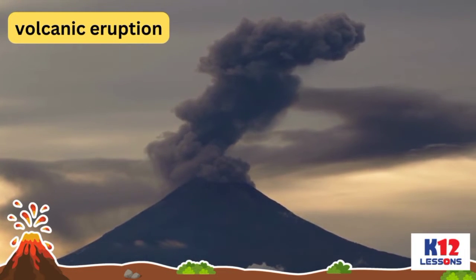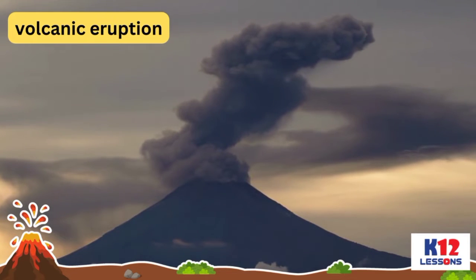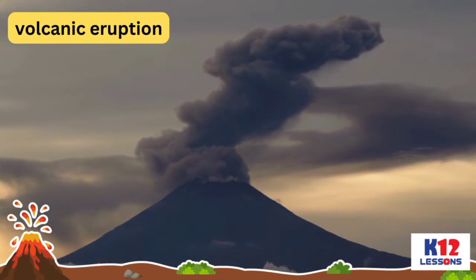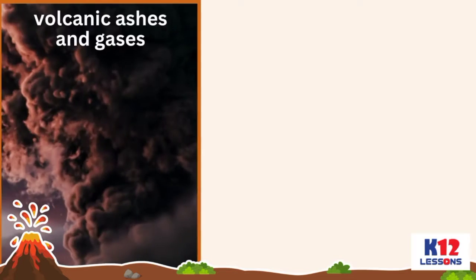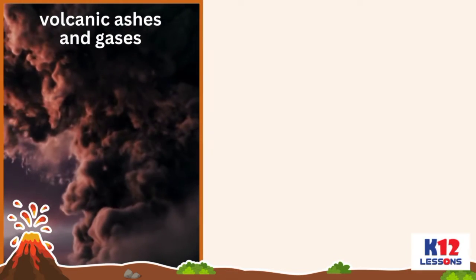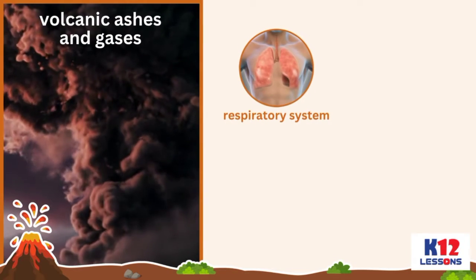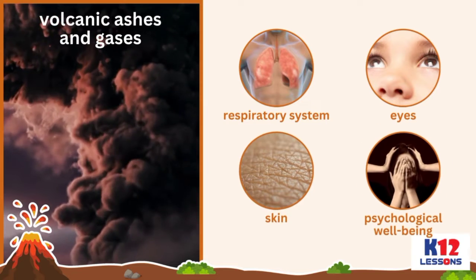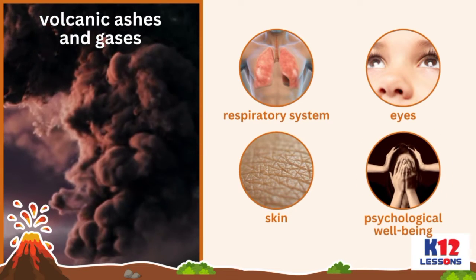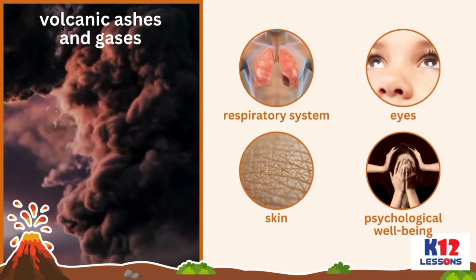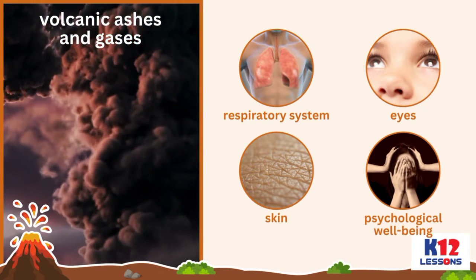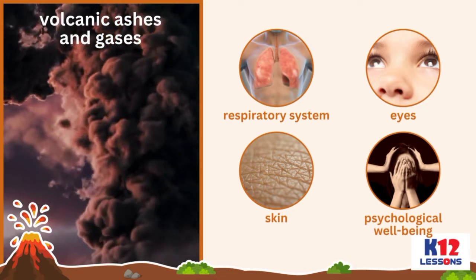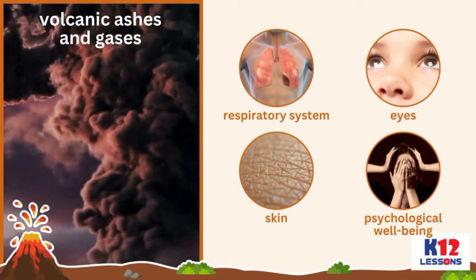A volcanic eruption affects people, economy, and the environment. It can pose a threat to people's health. Toxic volcanic ashes and gases can affect humans' respiratory system, eyes and skin, as well as psychological well-being. People get sick because of materials released from an erupting volcano.